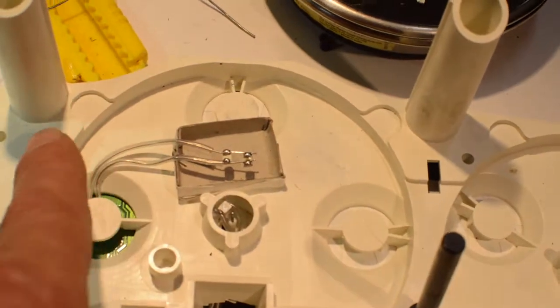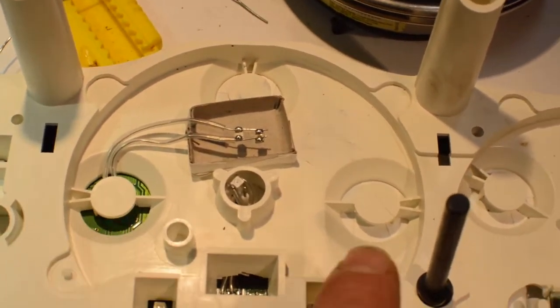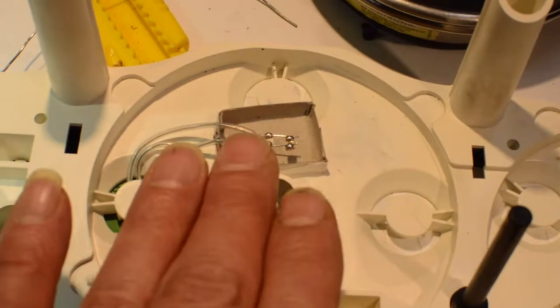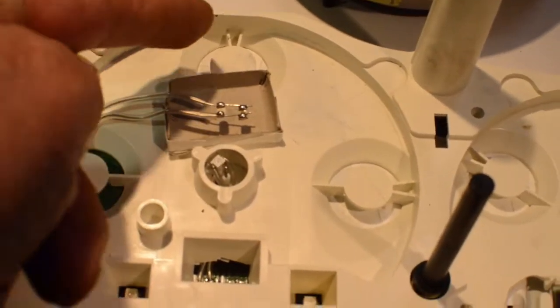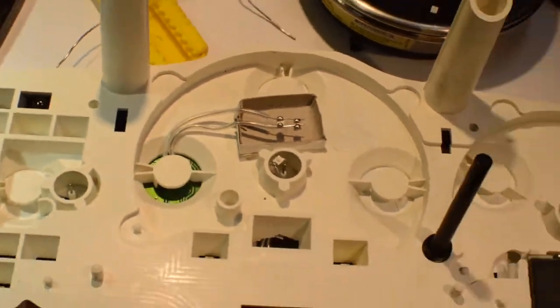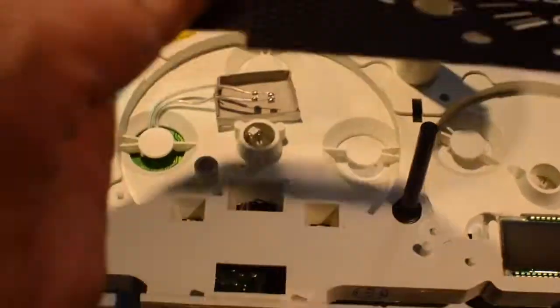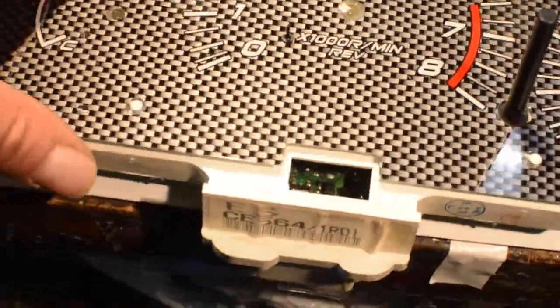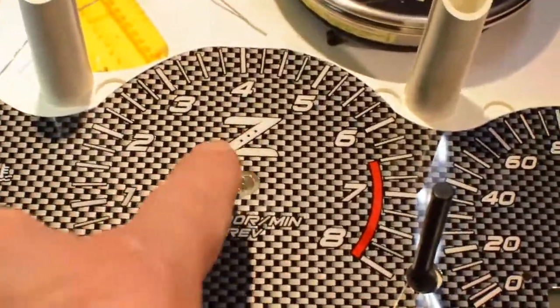So the green doesn't bleed to the blue and the blue doesn't bleed to the green. I dropped the gauge face in and it took a while to adjust. It was really hard to get it smooth.